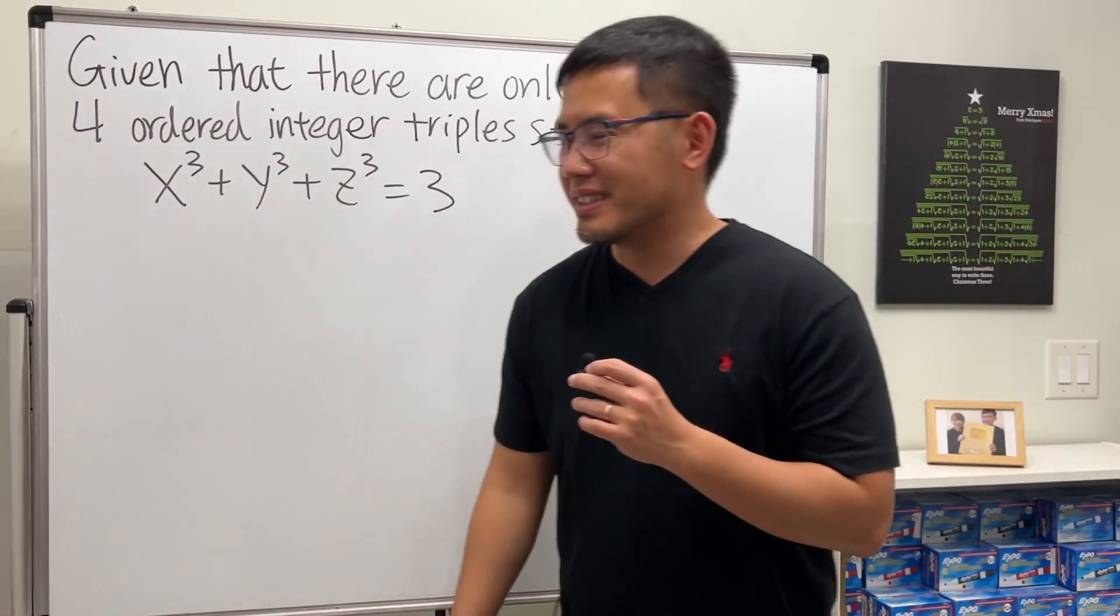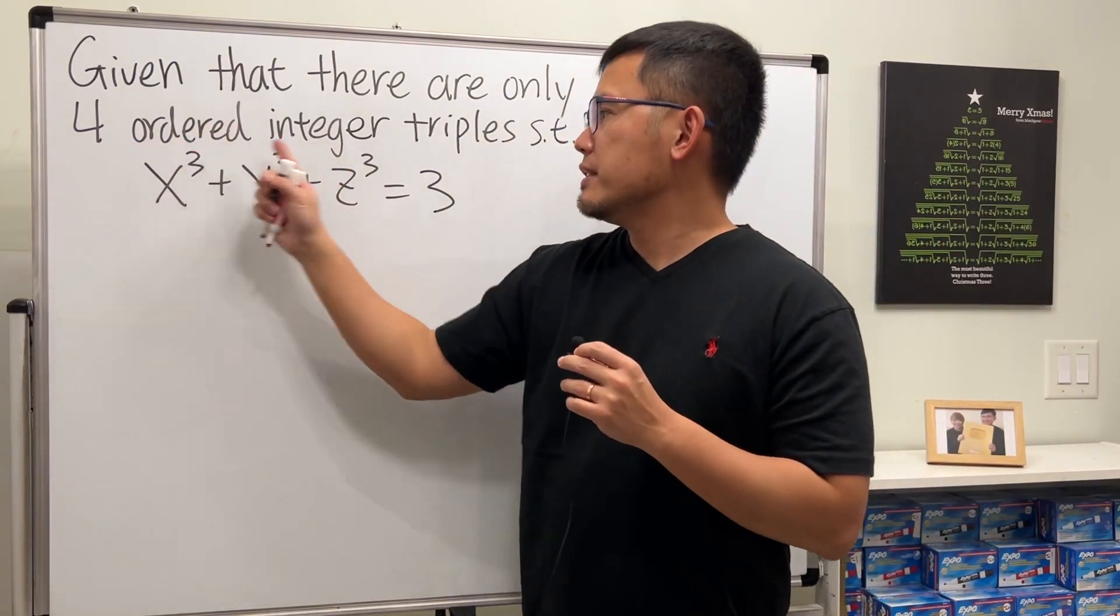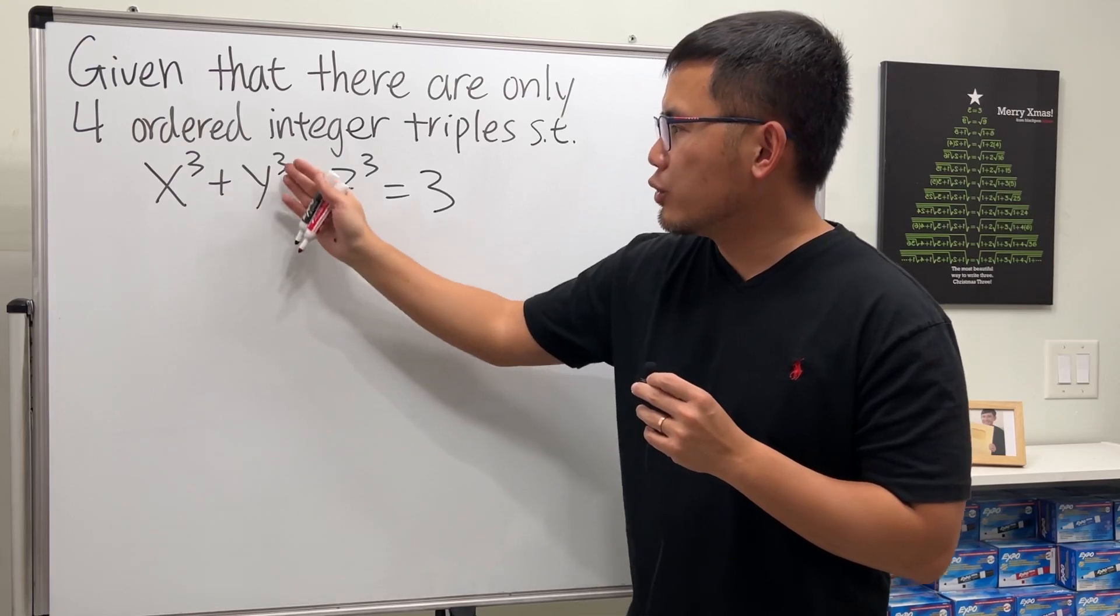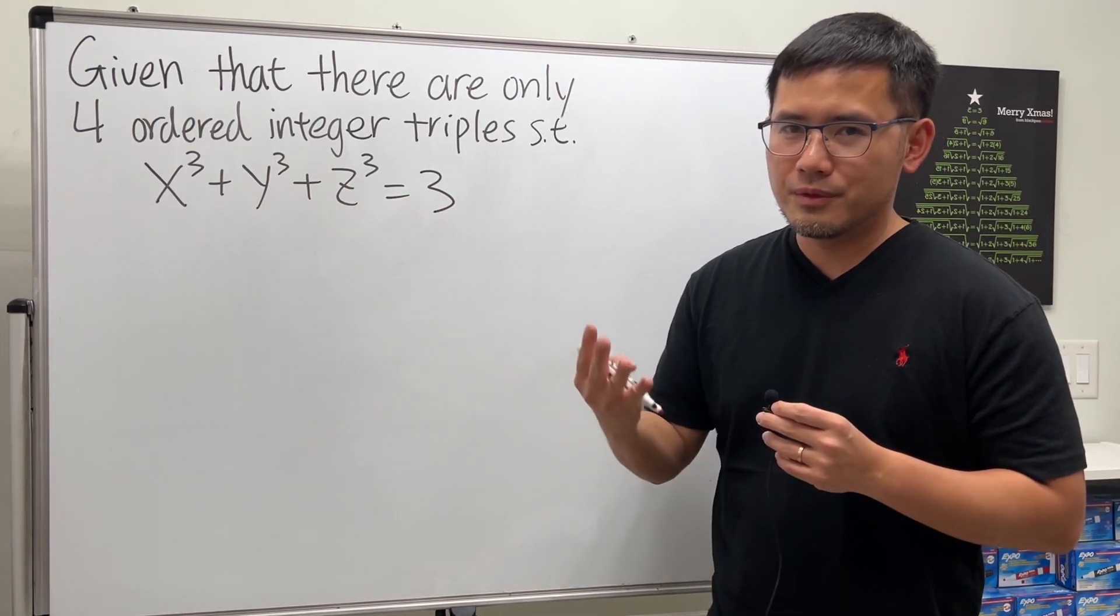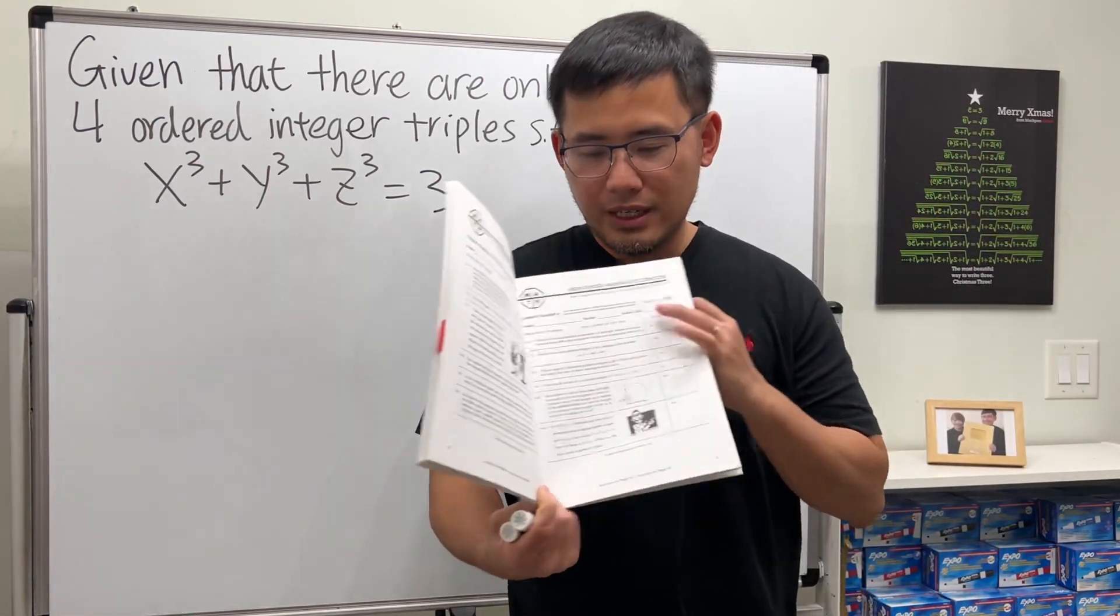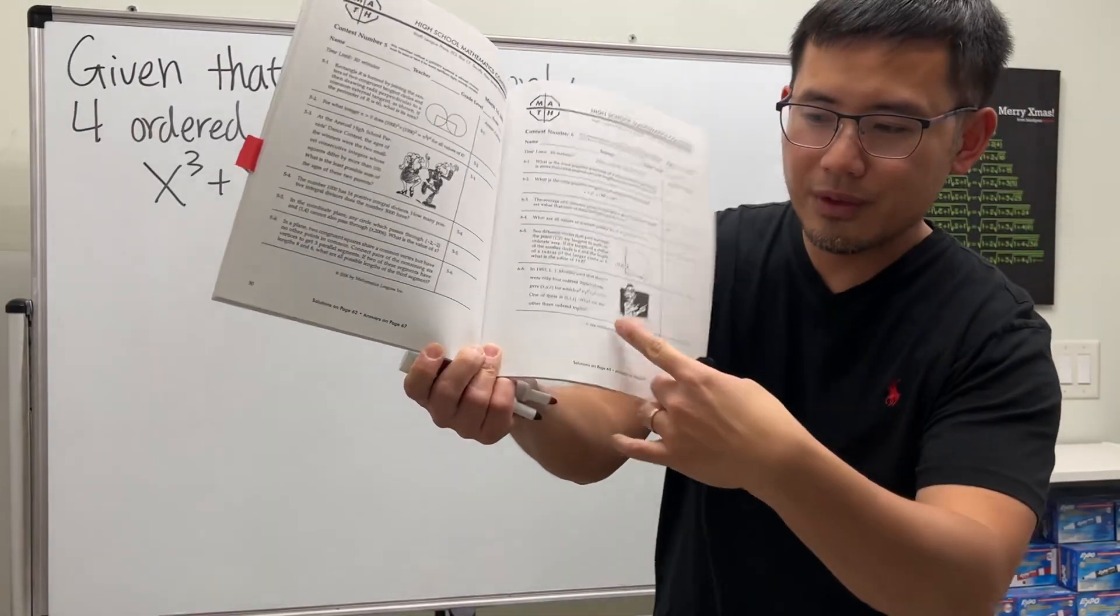All right, this is a very interesting question, check this out. We are given that there are four ordered integer triples, so that x³ + y³ + z³ equals 3. And of course, we are going to find them, all four of them. I got this question from the MathD contest. This book, and this is from 2006, right here, this one.